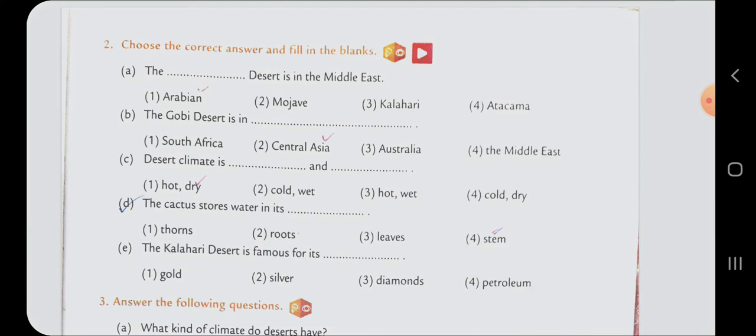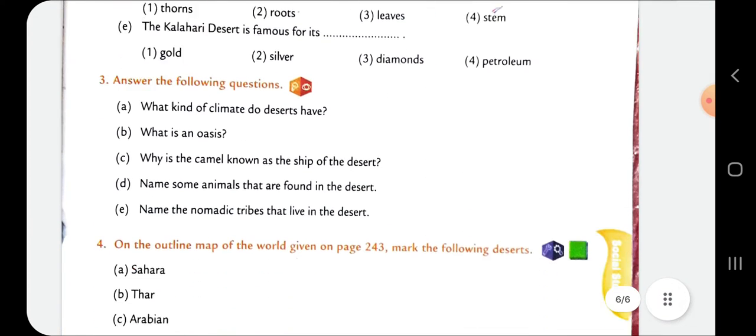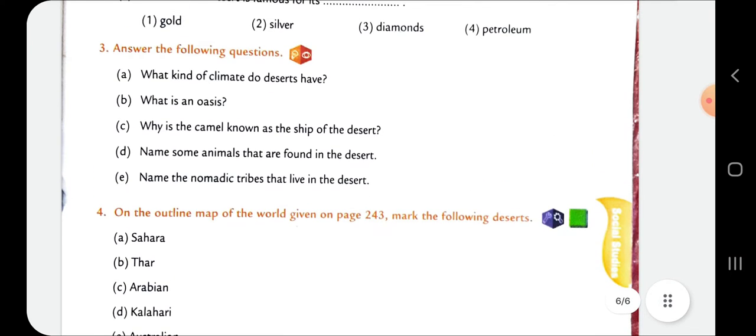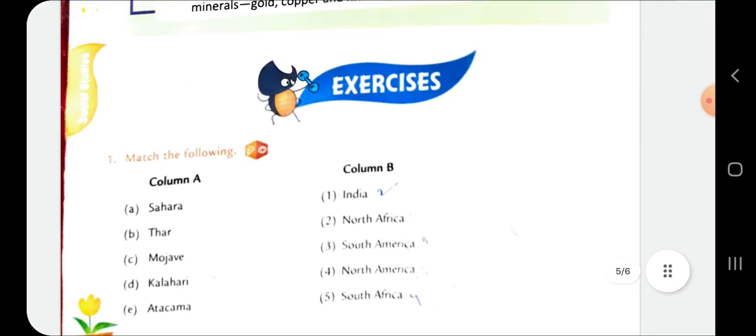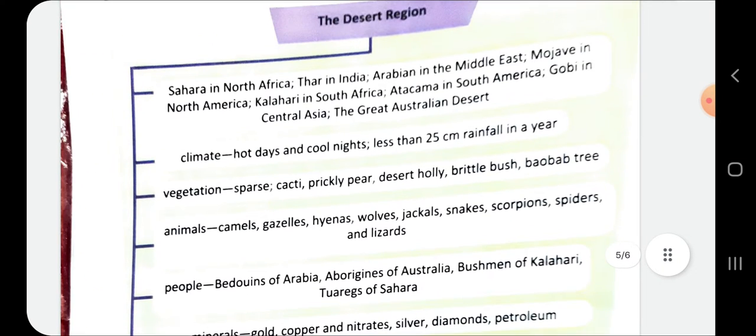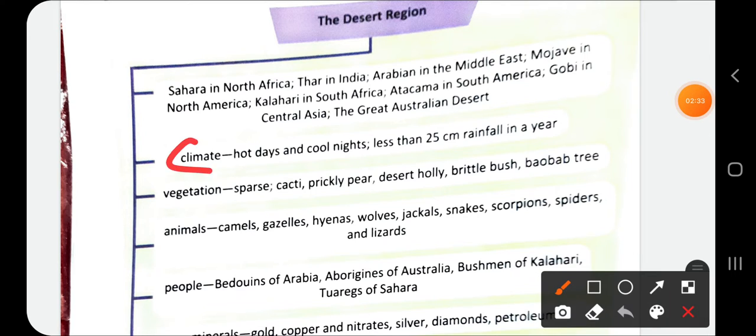Then comes answer the following type of question. What kind of climate do deserts have? That is given in the answer in your textbook recall page. Climate: hot days and nights, less than 25 cm rainfall in a year. That is question number one.